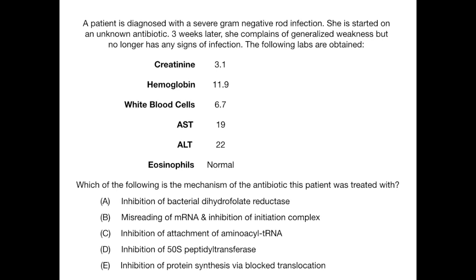Which of the following is the mechanism of the antibiotic that this patient was previously treated with? A: Inhibition of bacterial dihydrofolate reductase. B: Misreading of mRNA and inhibition of initiation complex. C: Inhibition of attachment of aminoacyl-tRNA. D: Inhibition of 50S peptidyl transferase. Or E: Inhibition of protein synthesis via blocked translocation.